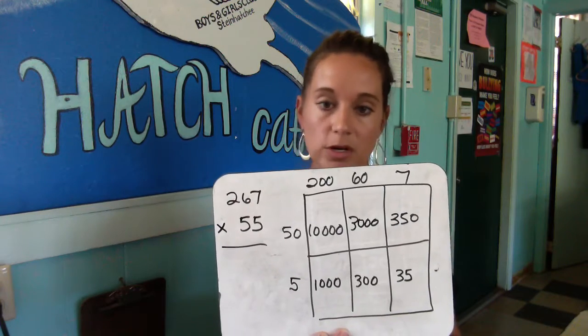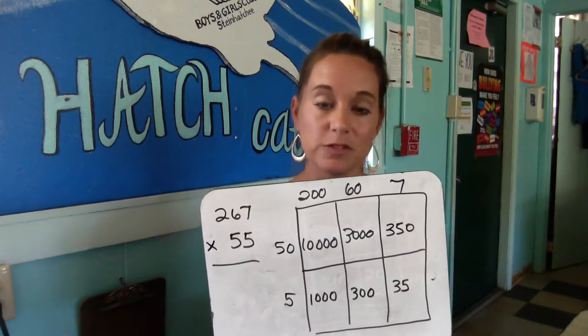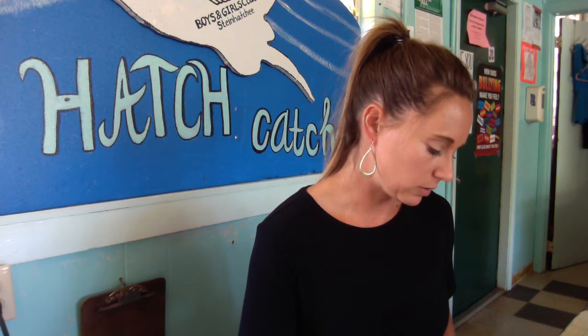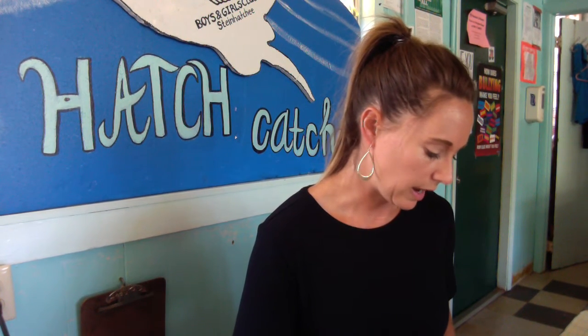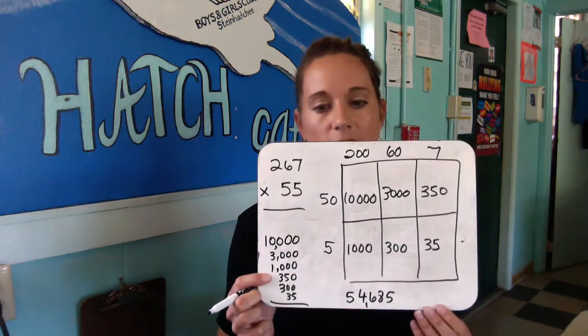Line up your numbers — with math we read from left to right, it's the opposite of reading. You would add up 10,000, and I'd encourage you to have them write their commas. Then 3,000, 1,000, 350, 300, and 35 — that's what their addition would look like at the bottom, and all of that adds up to 14,685.